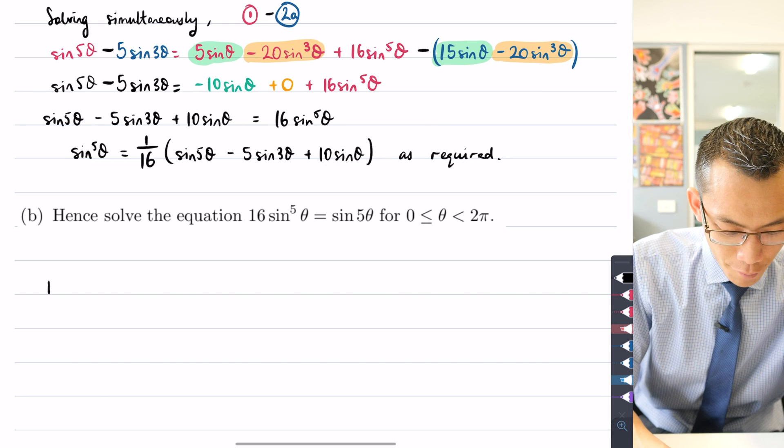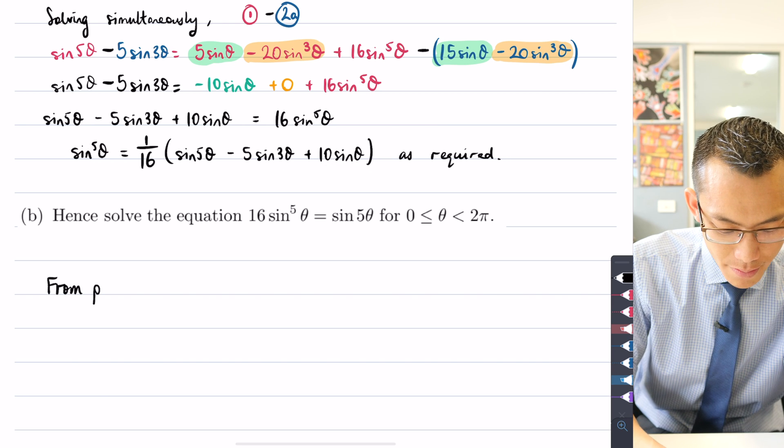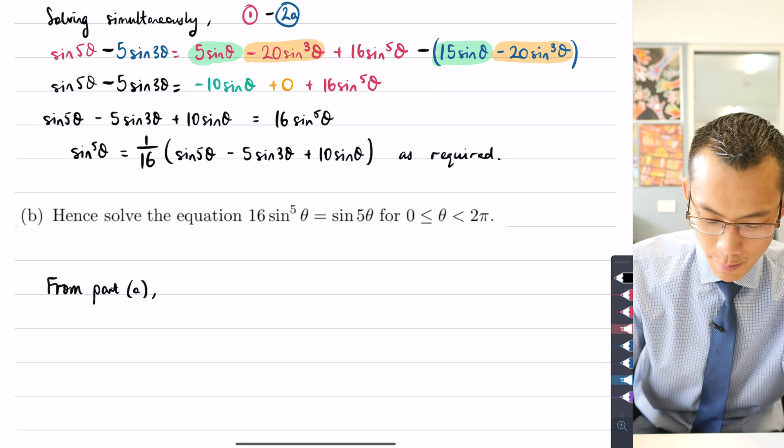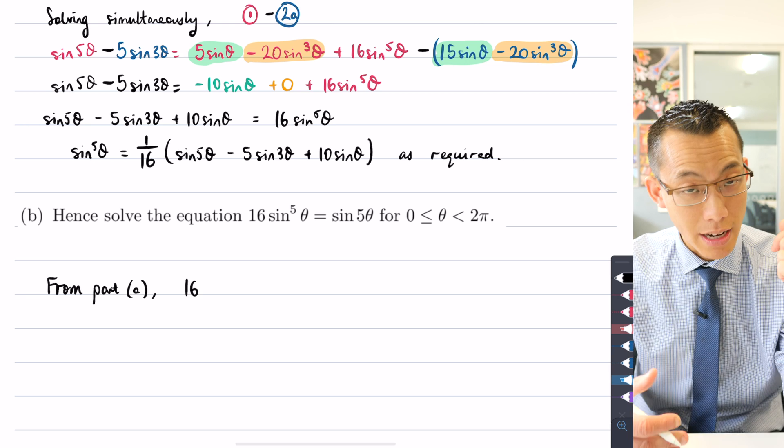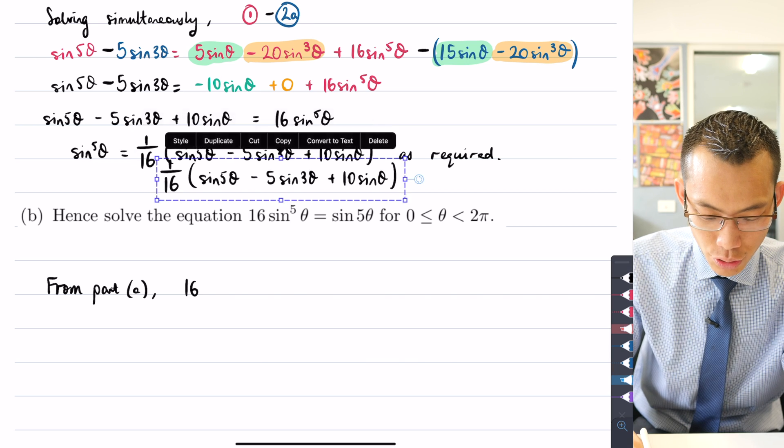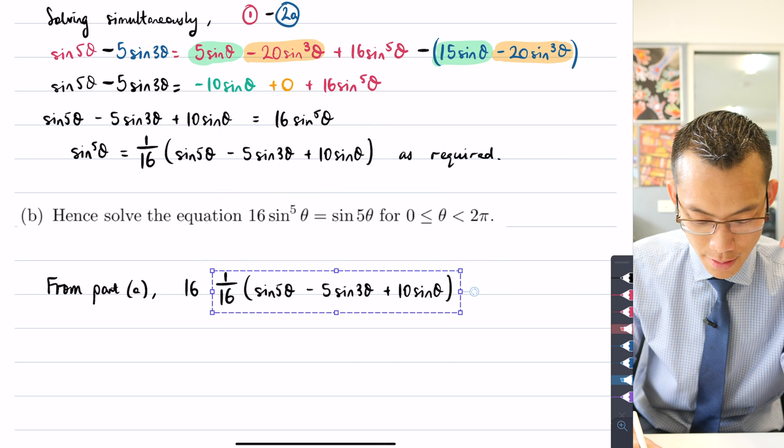So I can say from part A, I'm going to simply substitute in instead of writing 16 sin⁵θ, I'm going to say 16 times this because this is equivalent to sin⁵θ.